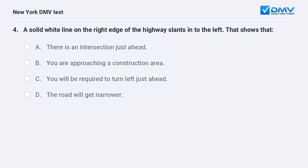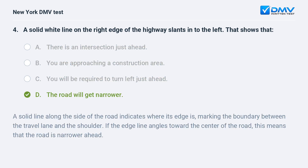A solid white line on the right edge of the highway slants in to the left. That shows that: A. There is an intersection just ahead. B. You are approaching a construction area. C. You will be required to turn left just ahead. D. The road will get narrower. A solid line along the side of the road indicates where its edge is, marking the boundary between the travel lane and the shoulder. If the edge line angles toward the center of the road, this means the road is narrower ahead.